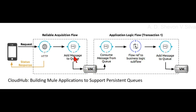If your Mule instance experiences an outage and is unable to process a rollback, the transaction is automatically rolled back once the allotted time for the transaction is exceeded. The timeout is determined by the timeout attribute of the transaction element.